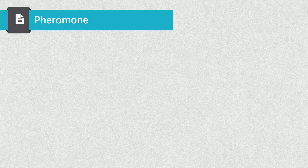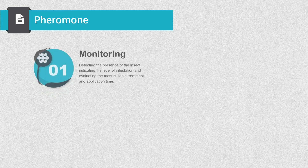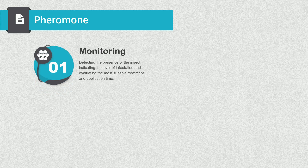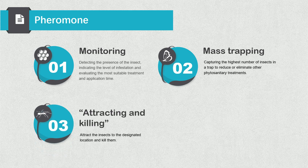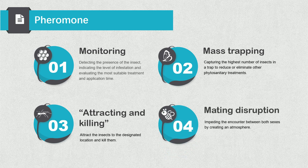Pheromones can be used to control different life phases of pests in the following aspects: monitoring — detecting the presence of insects, indicating the level of infestation, and evaluating the most suitable treatment and application time; mass trapping — capturing the highest number of insects to reduce or eliminate phytosanitary treatments; attracting and killing — attracting insects to a designated location and killing them; and mating disruption — impeding the encounter between both sexes by creating a disorienting atmosphere.